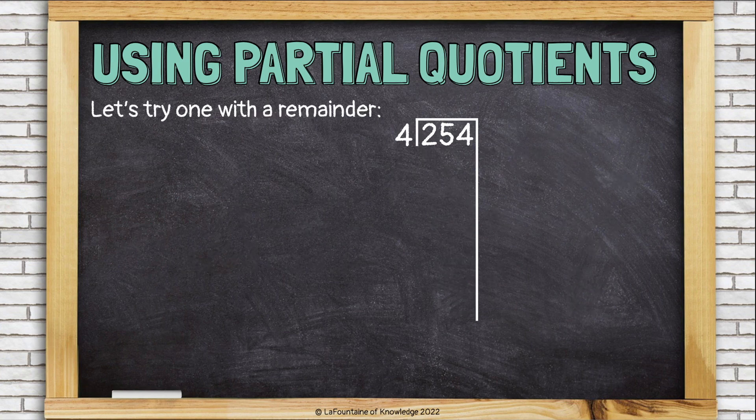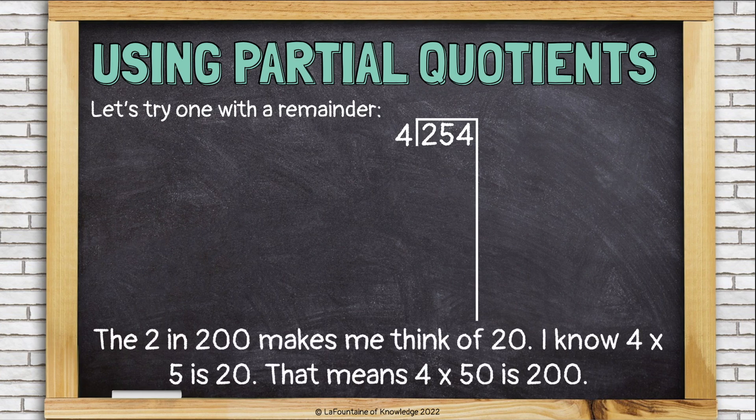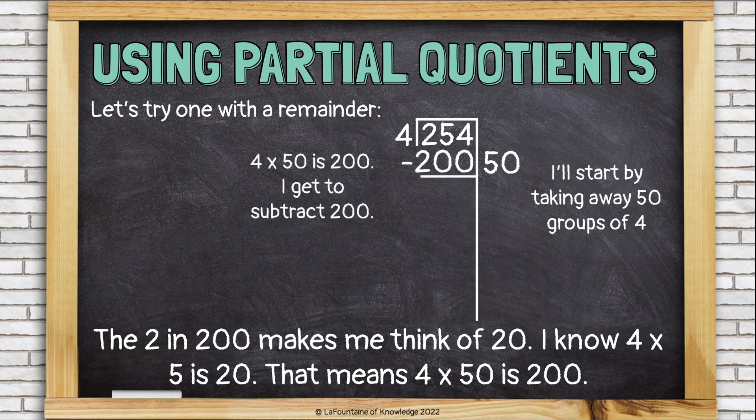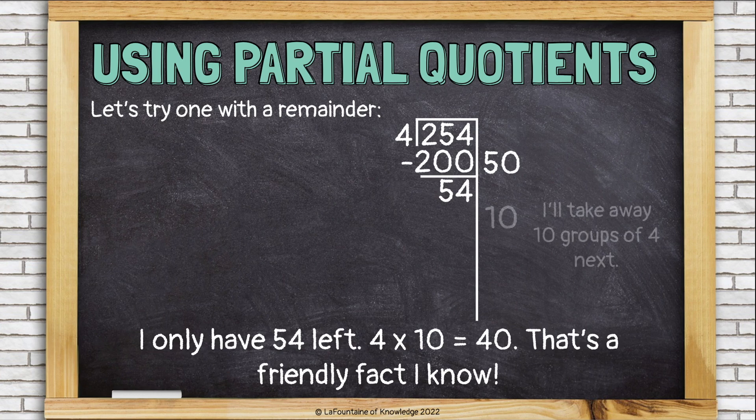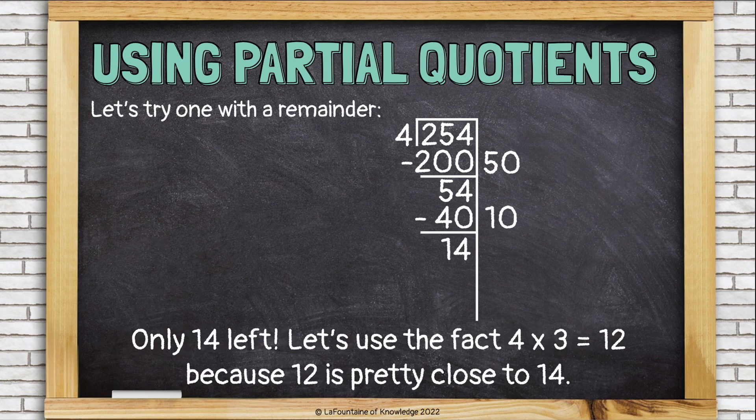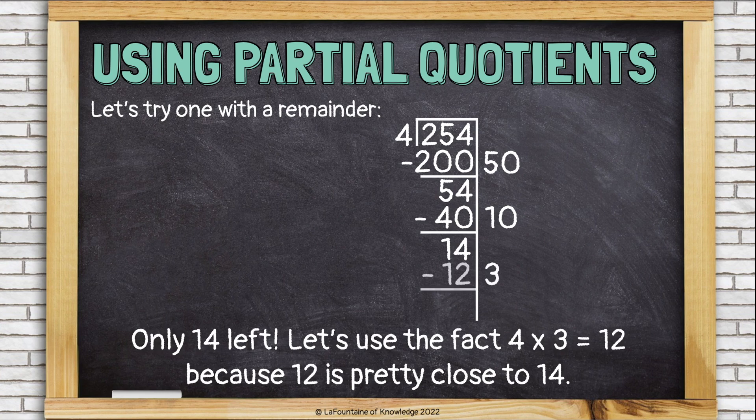Let's look at one more problem, this time with a remainder, 254 divided by 4. The 2 in the 200 makes me think of 20, and I know that 4 times 5 is 20, so that means 4 times 50 is 200. I'll start by taking away 50 groups of 4. That's 200. That's pretty good. Now I'm down to 54. 4 times 10 is 40. That's an easy fact I know. I'll take away 10 groups of 4, and I get to subtract 40, and I only have 14 left. Let's use the fact 4 times 3 equals 12, because 12 is pretty close to 14. 14 minus 12 is 2.